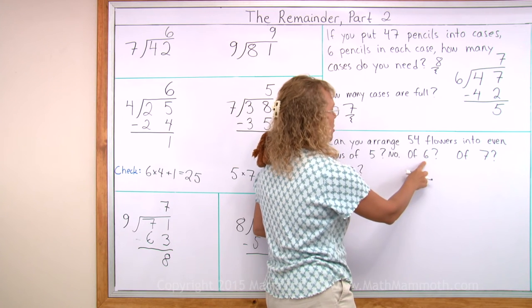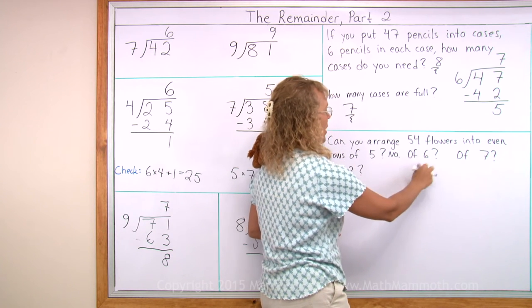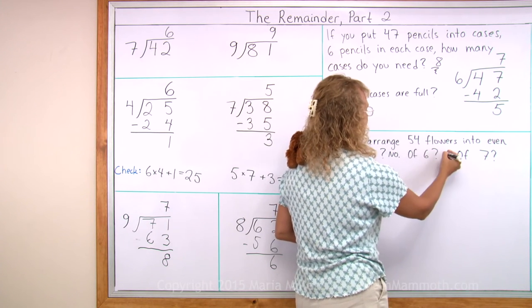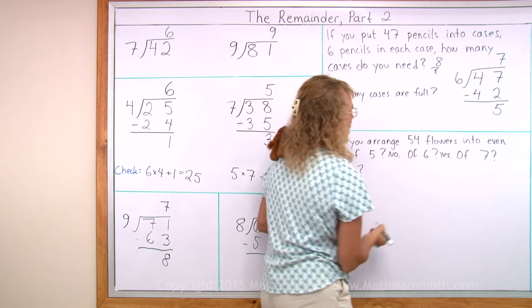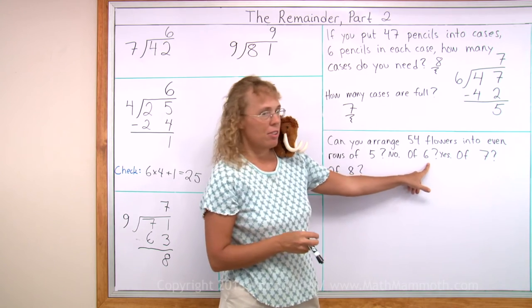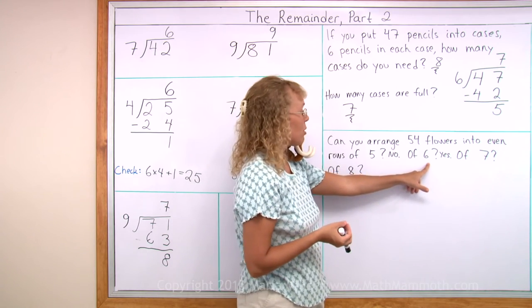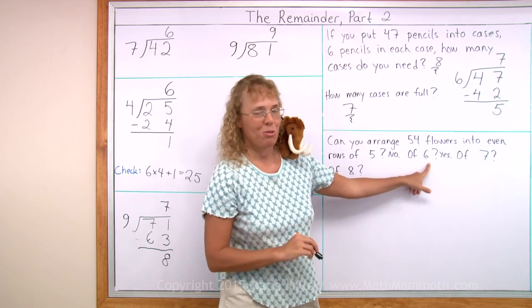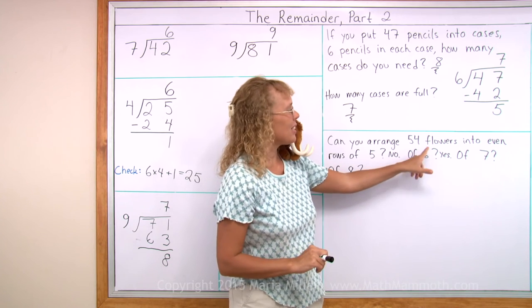Now, is 54 in the table of 6? Yes, it is. 6 times 9 is 54. And so I could. If I arrange 54 flowers into even rows of 6, then I get 9 rows. Exactly 9 rows. Because 9 times 6 is 54.